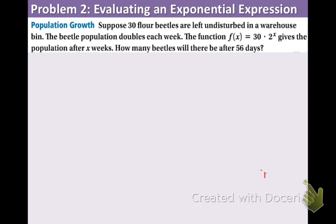Example two. Here comes the real life application. This is for all you beetle lovers out there. I know a lot of people don't like beetles, but here we go. So, suppose 30 flower beetles are left undisturbed in a warehouse bin. The beetle population doubles each week. The function f of x equals 30 times 2 to the x power gives the population after x weeks. How many beetles will there be after 56 days?